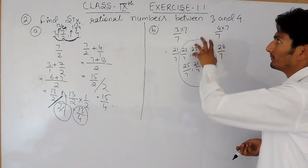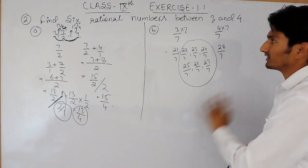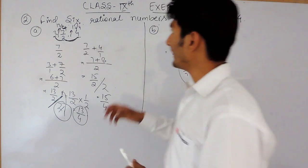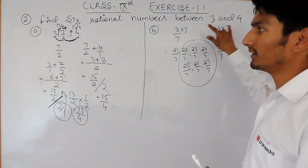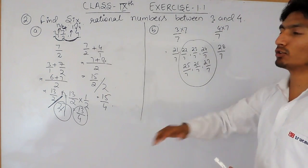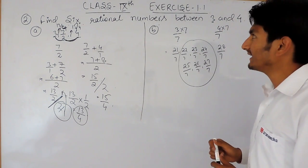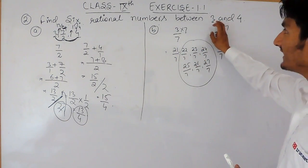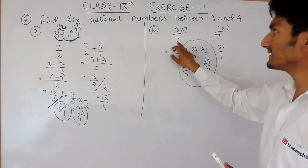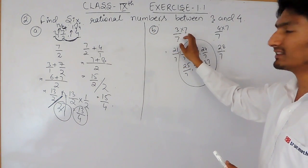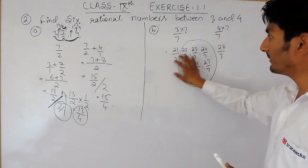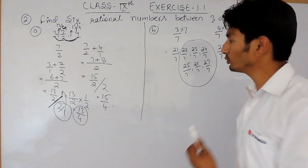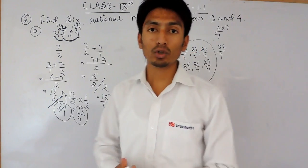These 6 values — 22/7 through 27/7 — are the 6 rational numbers between 3 and 4. So in the first method, you add two numbers and divide by 2. In the second method, to find 6 rational numbers, divide by 6 plus 1, multiply both numbers by 7, and the numbers between the two resulting numerators are your 6 rational numbers.